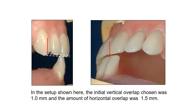This overlap is related to the patient's previous skeletal relationship. We need to adjust to the class 1 relationship: 1 to 2 mm horizontally and vertically, and we need to achieve 1.5 mm without any contact in centric relation.